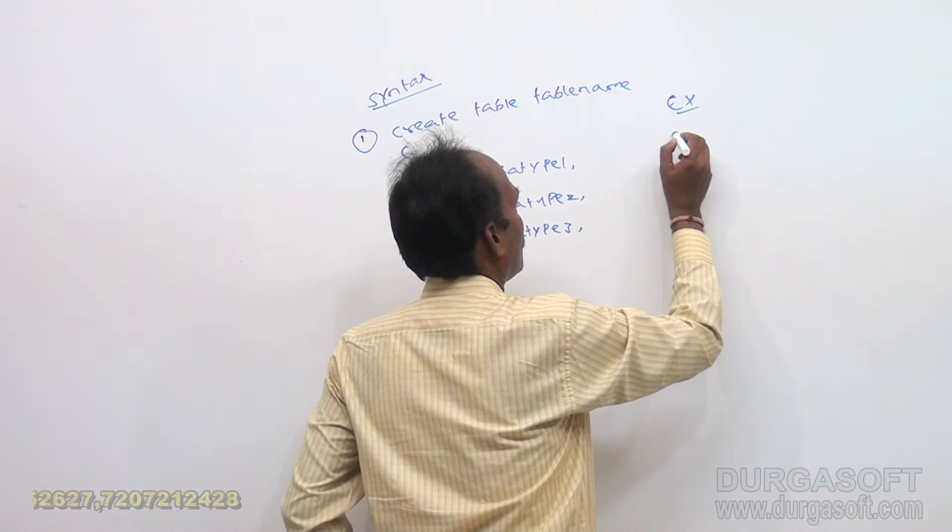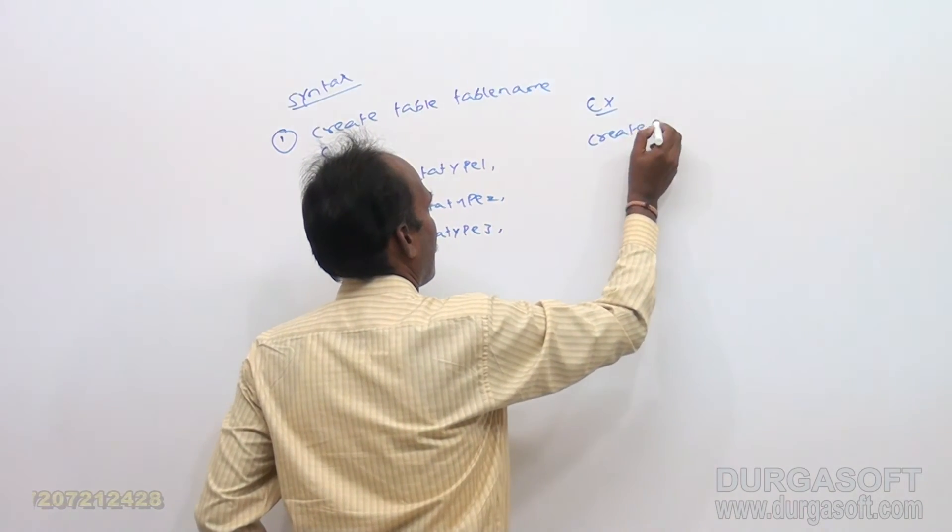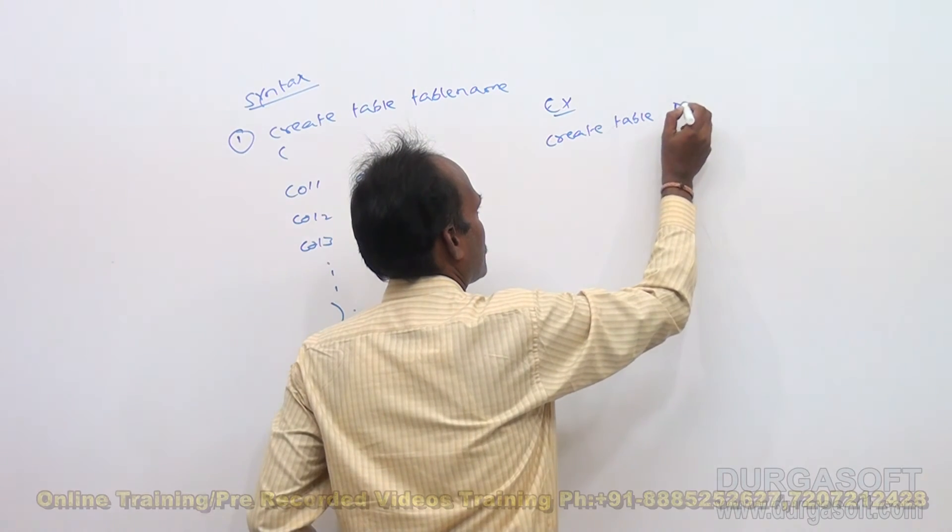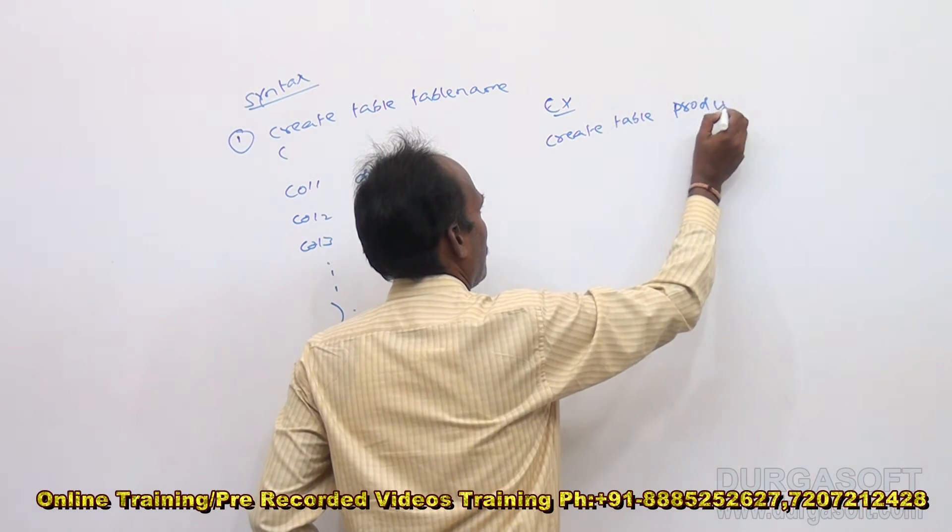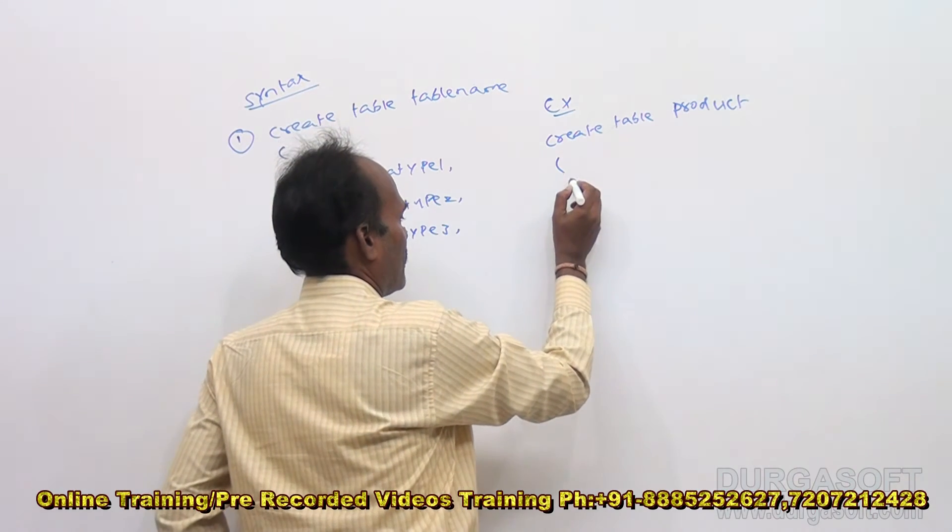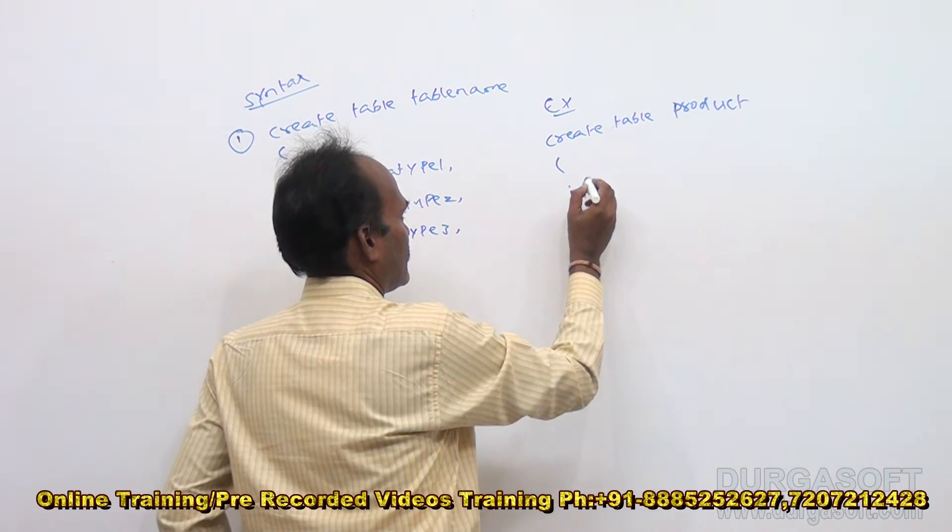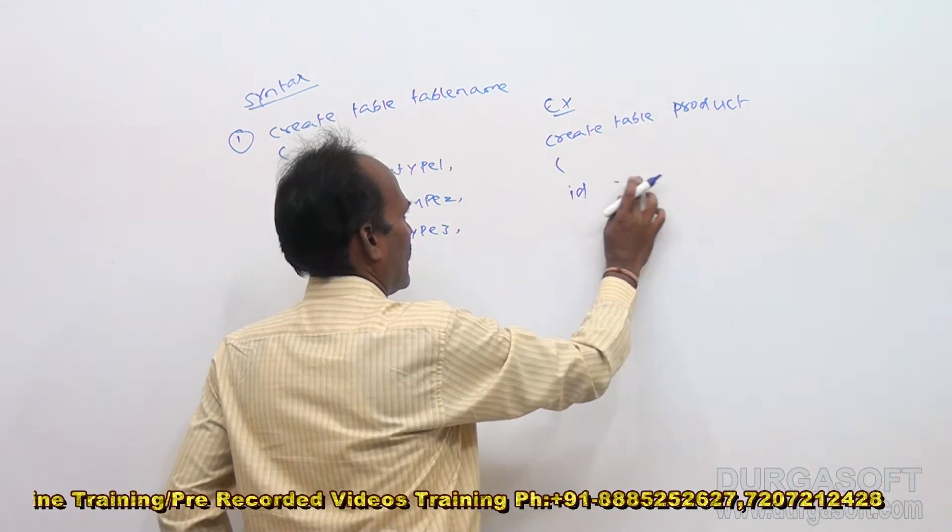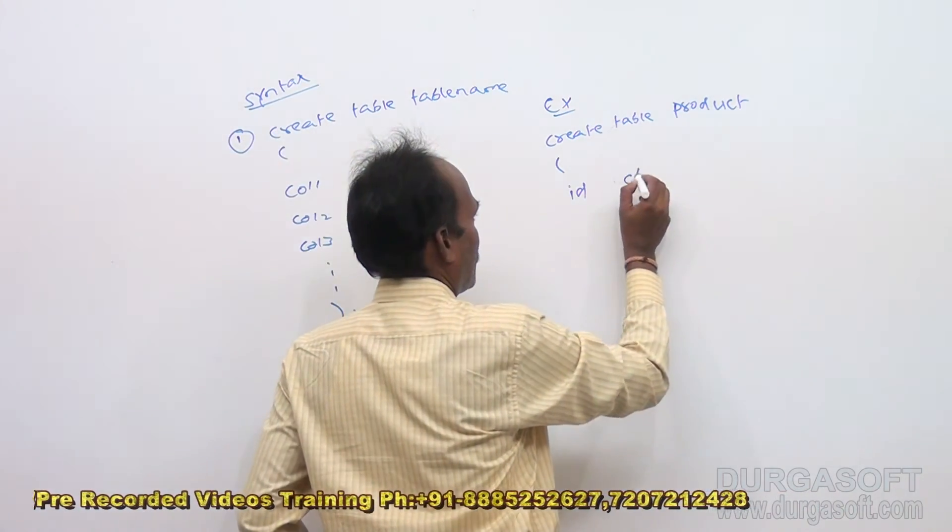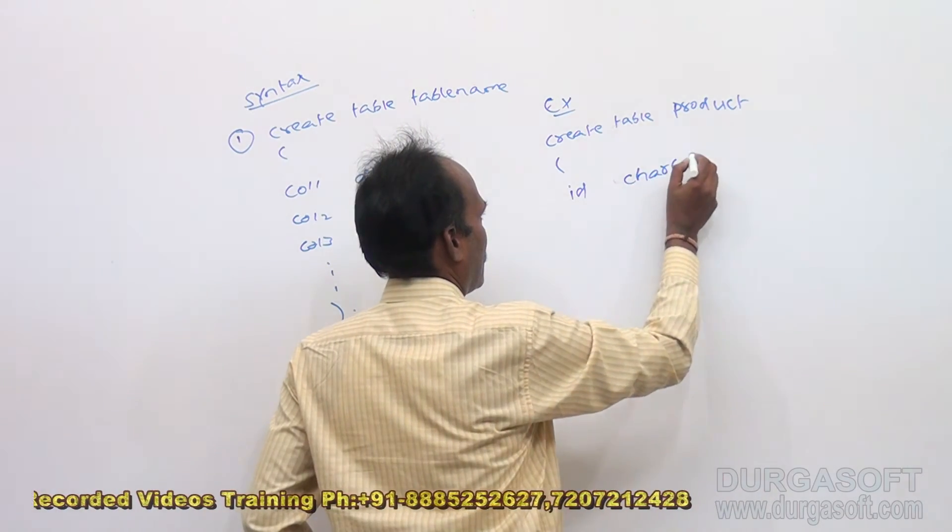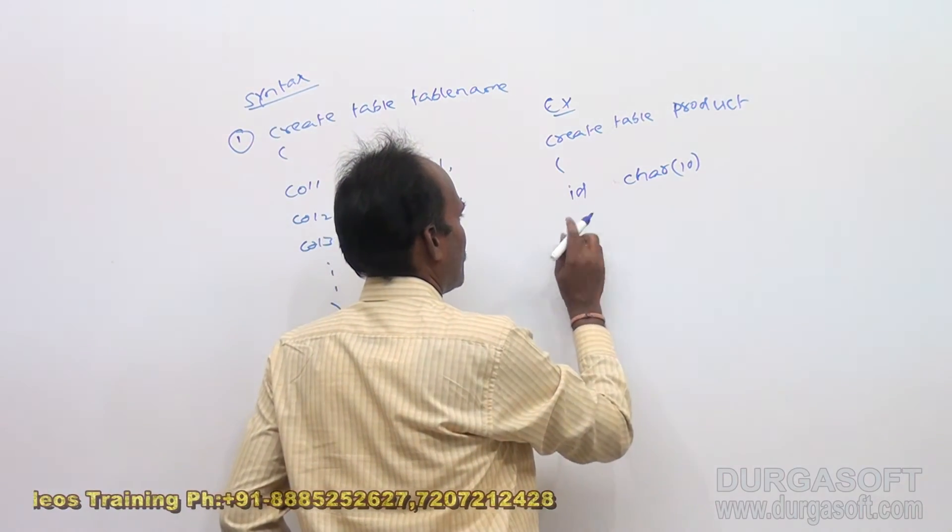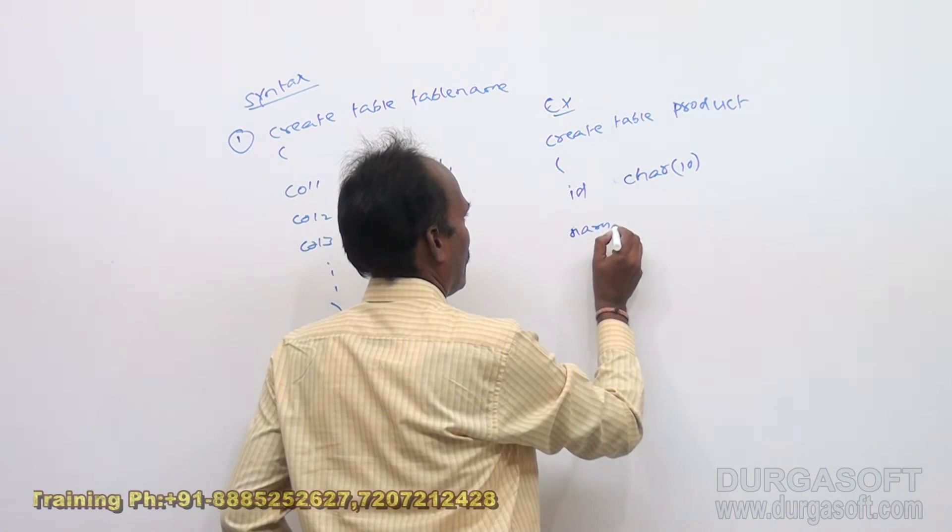For example, I will take product table. Create table, table name is product. Within the product table, just I wanted to write some columns. I wanted to create some columns like id, this is product id. Product id I am giving it as number or character. Number if you give means it will not accept any characters. Better we give character, character 10, so that it can read, it can accept characters as well as numbers. Next one is product name. It also comes under again character category.